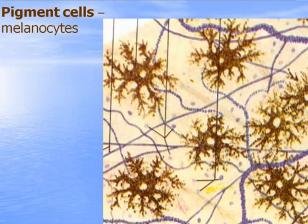Pigment cells, or melanocytes, produce pigment inclusions — melanin — which provide the brown color to tissues and protect tissues from the dangerous action of ultraviolet light.